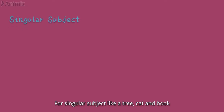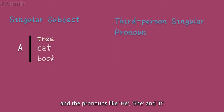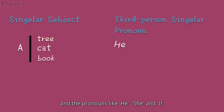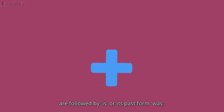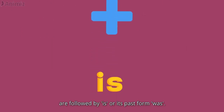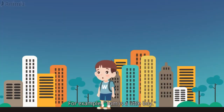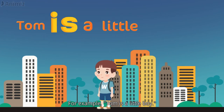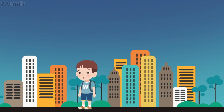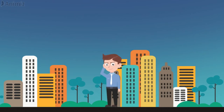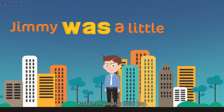For singular subjects like a tree, a cat, a boat, and the pronouns he, she, and it, are followed by 'is' or its past form 'was'. For example: Tom is a little boy. And Jimmy was a little boy.